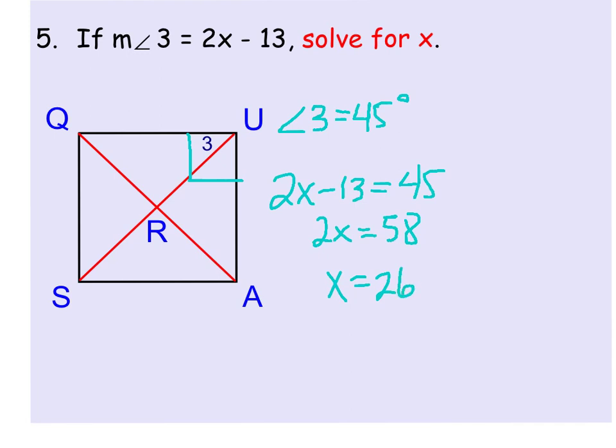So again, because we know that angle U is a right angle, and because we know the diagonal has bisected it, that's why angle 3 is equal to 45 degrees, 90 divided by 2.